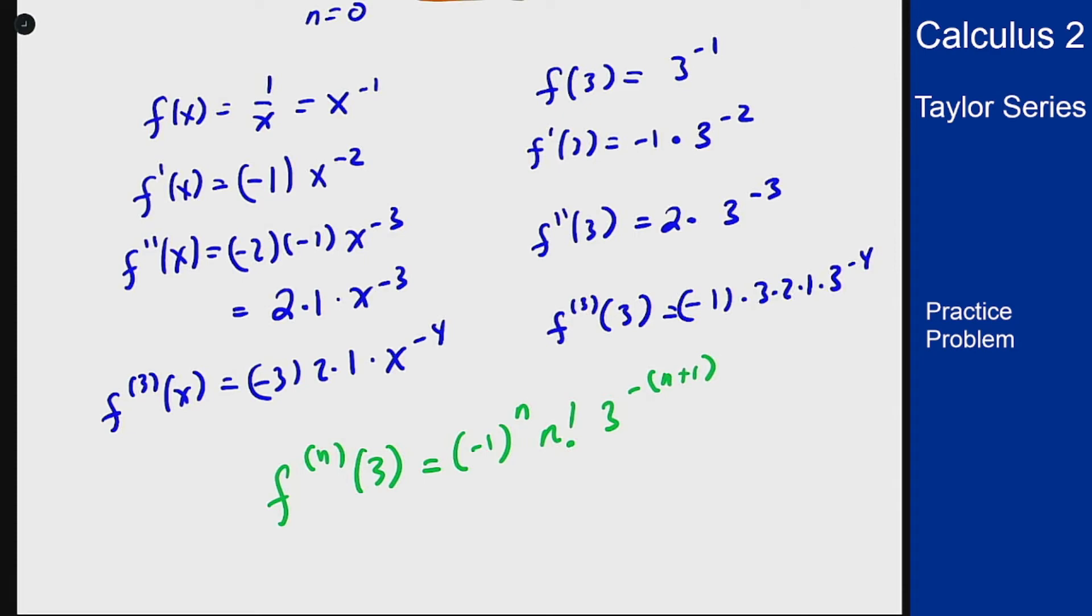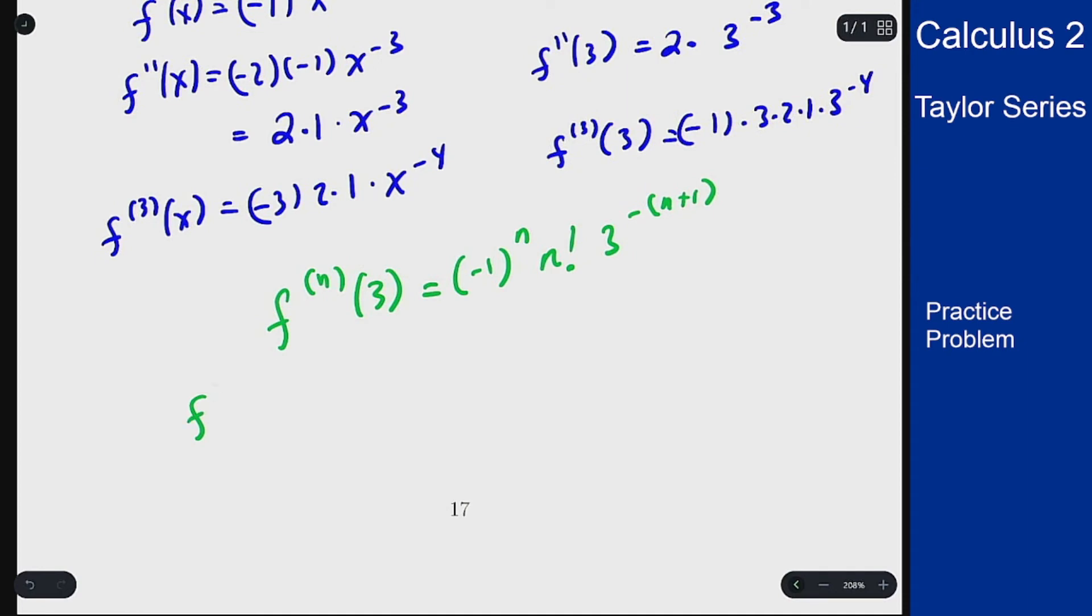So this means that our term going into our Taylor series of f n of 3 over n factorial is just negative 1 to the n times 3 to the negative n plus 1 or negative 1 to the n over 3 to the n plus 1.